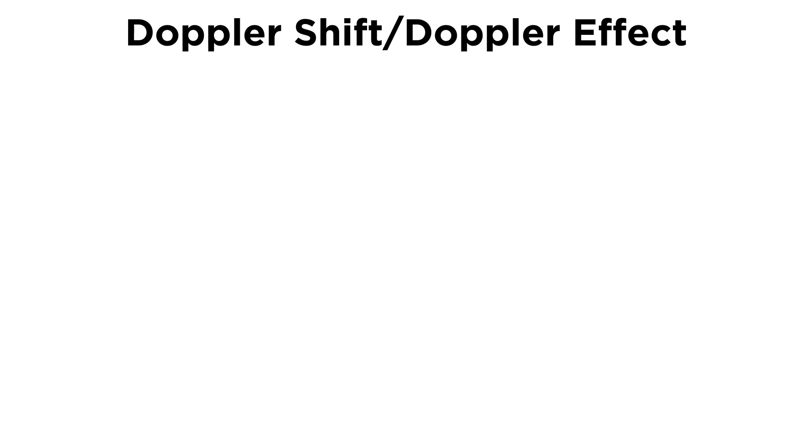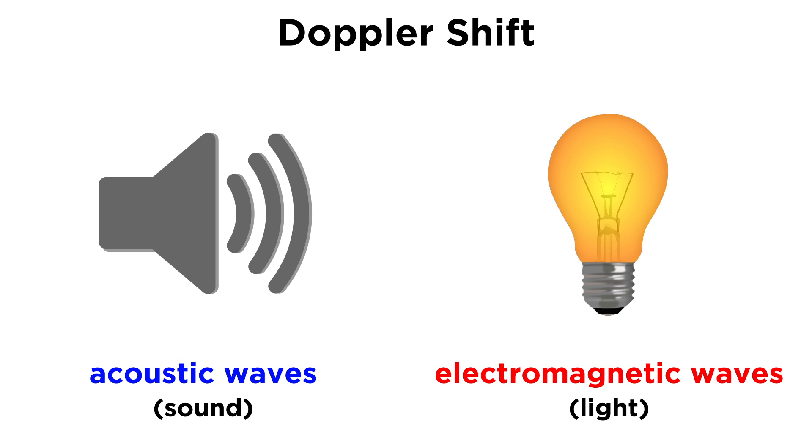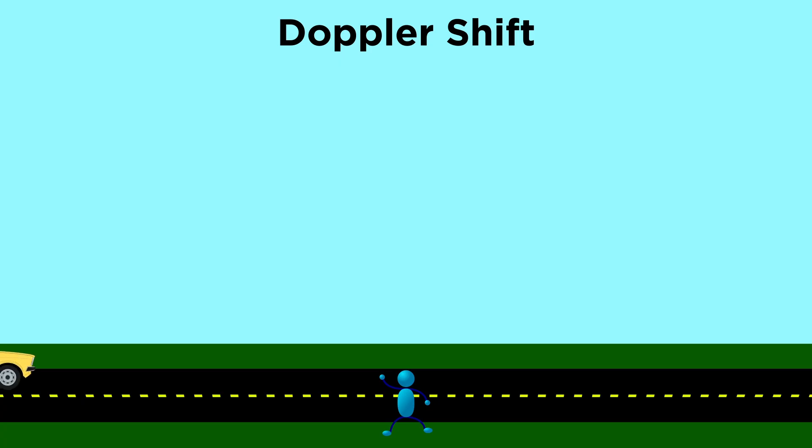To understand how this is possible, we must learn about a phenomenon called the Doppler shift, or the Doppler effect. Say we have some source of waves, which could be acoustic waves, or sound, just as well as electromagnetic waves, or light. Say that these waves are emitted with a constant frequency. Now let's say that the source of these waves is in motion with respect to our frame of reference, like a car.